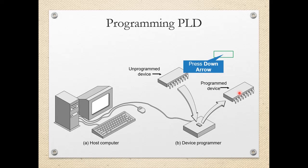How are PLDs programmed? From the host computer, the design is entered using hardware description languages — VHDL, Verilog, or Abel. Simulations are performed, and once the design is ready, the device is programmed per specifications using a device programmer. The device programmer is interfaced to the host computer through a serial connection. The unprogrammed chip is placed in the device programmer, and by downloading the .bit file into the target device, we program our device, obtaining a programmed chip that acts as our designed controller.